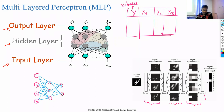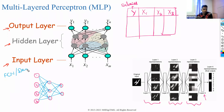When every neuron is connected to every other neuron in the forward layer, it is called a dense network, or multi-layered perceptron, or artificial neural network — all different names for the same architecture.